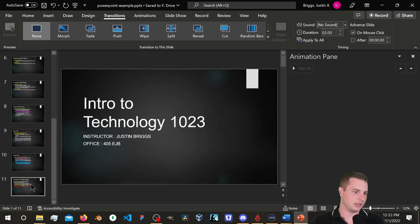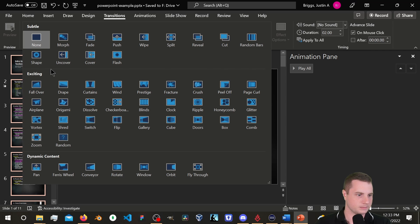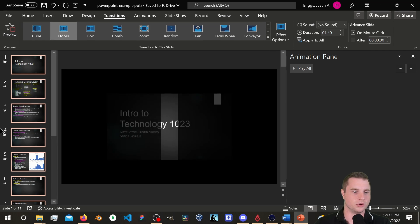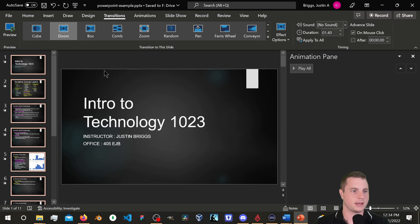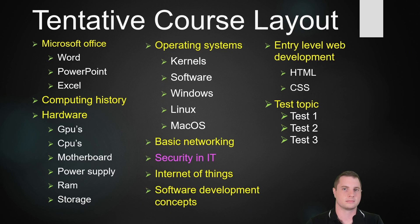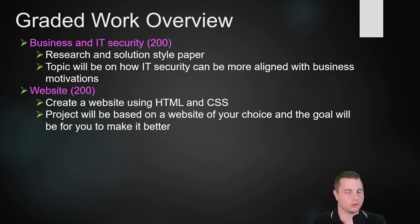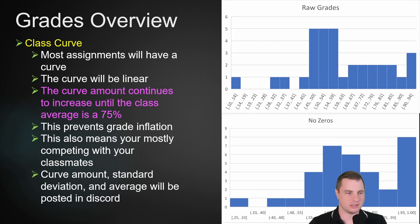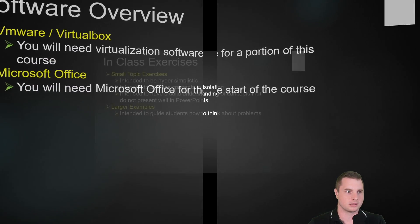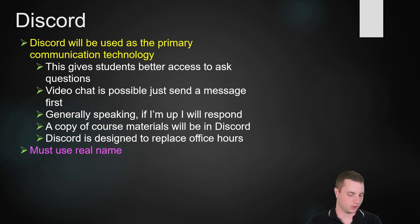I'm going to highlight all of these slides and pick a transition. Let's do Doors. There's that — I'll apply Doors to all slides. Now we have the Doors transition between all slides and a fly-in animation on one of the first ones.